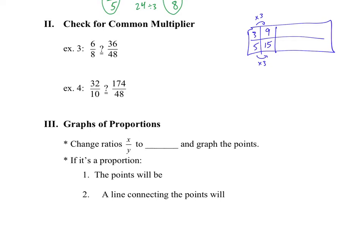Applying Method 2 to the first example: looking at 6/8 versus 36/48 — 6 times 6 equals 36, so I check if multiplying the denominator by 6 also works: 8 times 6 equals 48. Yes, the same multiplier of 6 works for both numerator and denominator, so these ratios are equal and form a proportion.